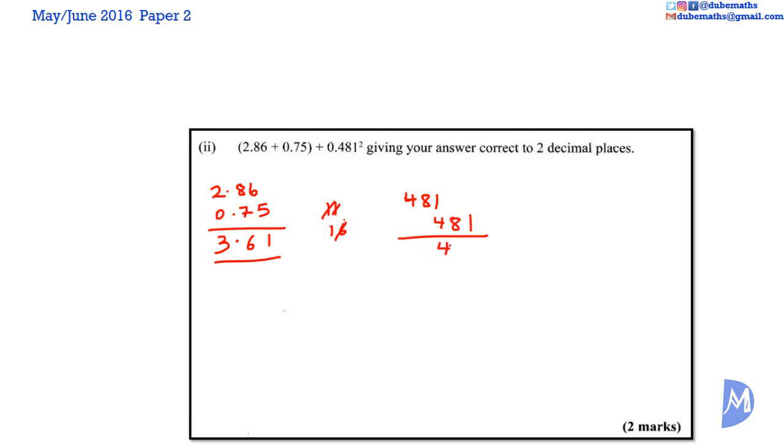1 times 4 is 4. 8 times 4 is 32. 4 times 4 is 16, plus 3 is 19. 1 times 8 is 8. 8 times 8 is 64. 4 times 8 is 32, 2 plus 6 is 38. 4 times 1 by 1 is 481. Use zeros as placeholders. And we add.